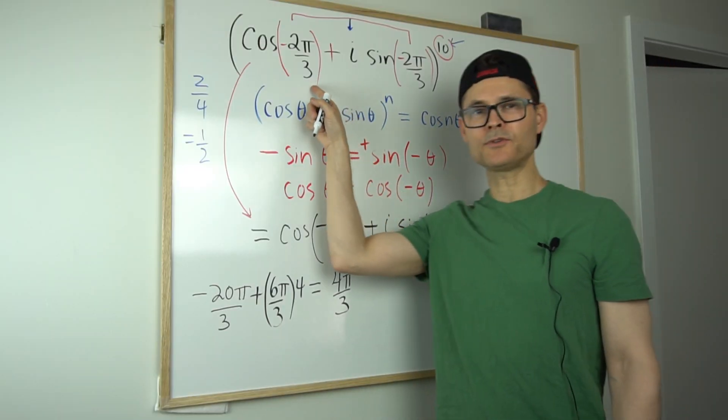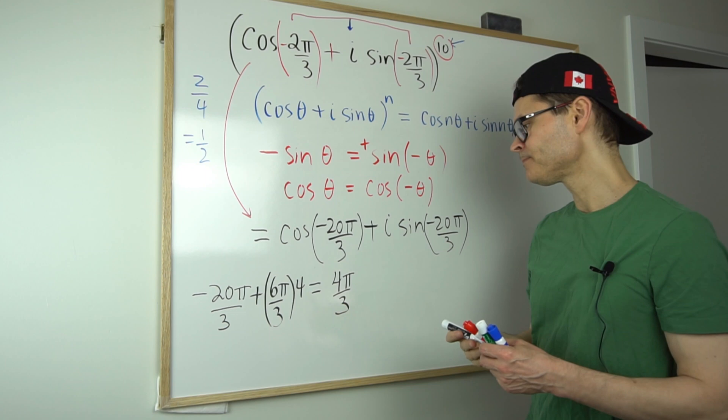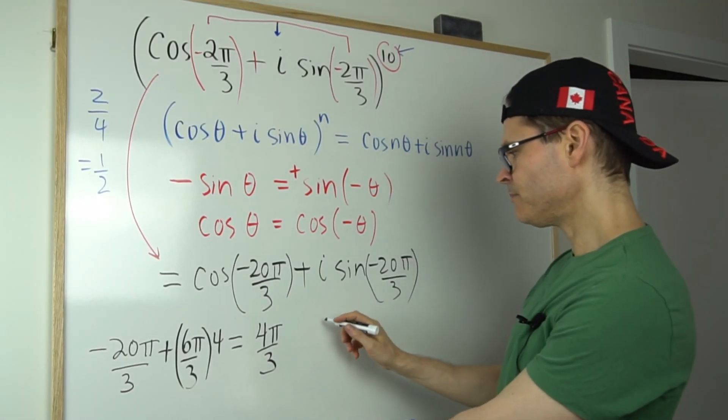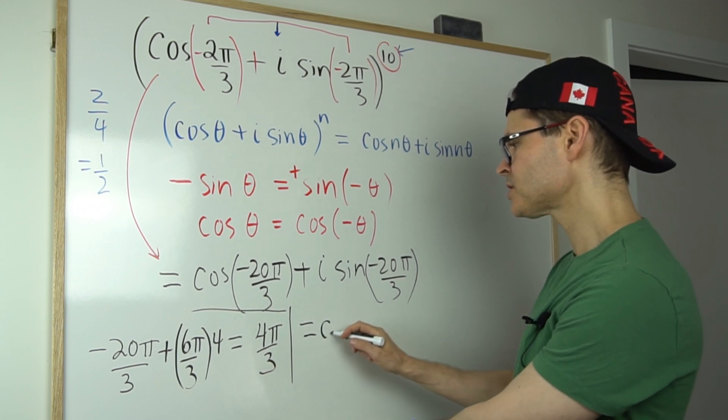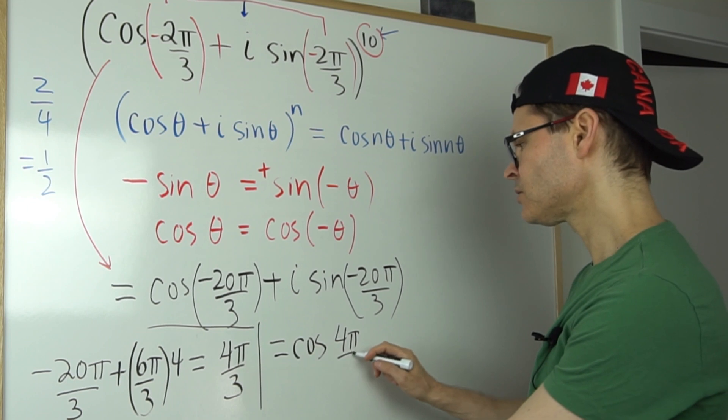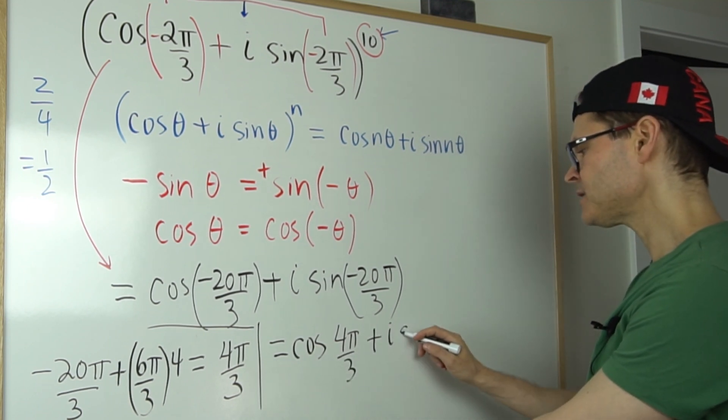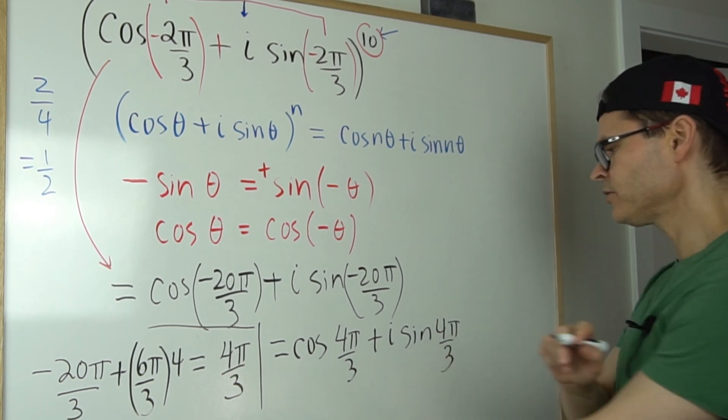You could have used negative 2π over 3 here too, if you wanted, but I'm just using a positive angle. So in this case here, my problem, I'll just put that to the side. So I've got cosine of 4π over 3 plus i times the sine of 4π over 3.